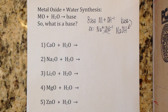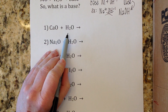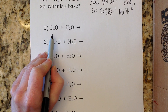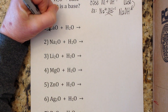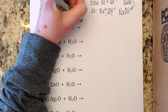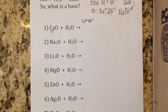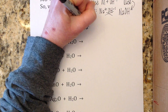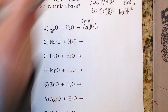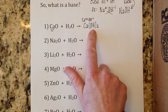Looking at number one: calcium oxide with water. This is a metal oxide because calcium is a metal. Take that metal and crisscross it with hydroxide to get the product. Calcium is Ca²⁺ and hydroxide is OH⁻¹, so the product is Ca(OH)₂. That is the base and the product of the reaction — if you dump calcium oxide in water, that's exactly what you get.